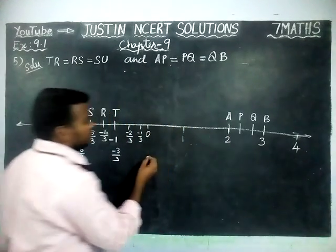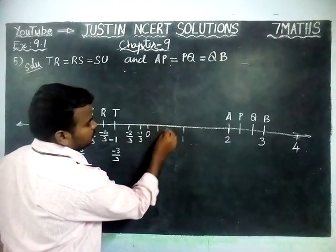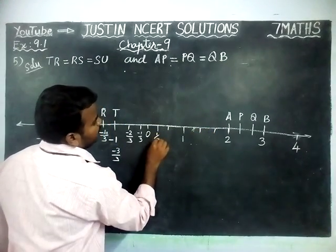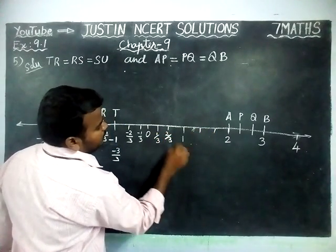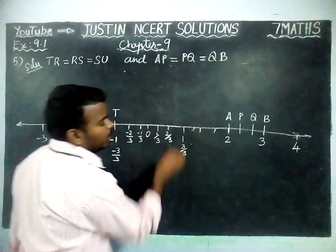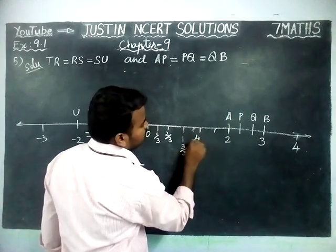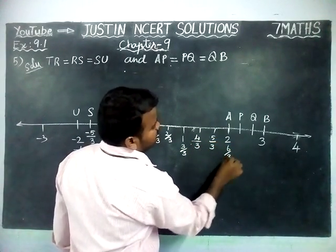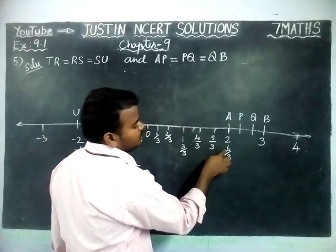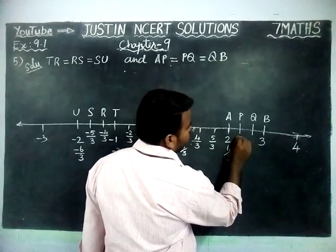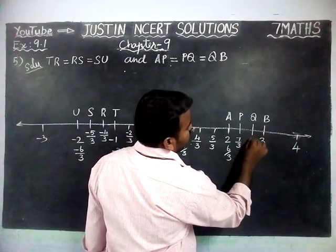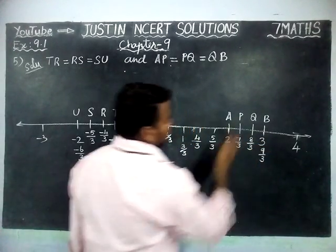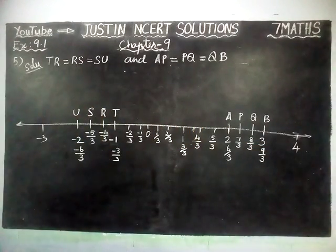On the right-hand side, from 0: this is 1 by 3, 2 by 3, 3 by 3 which equals 1. Next: 4 by 3, 5 by 3, 6 by 3 which equals 2. Then 7 by 3, 8 by 3, and 9 by 3 which equals 3.